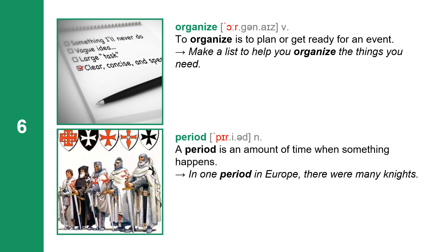Next one: organize. Organize has three syllables: O-R-G-A-N-I-Z-E. Organize is a verb. To organize is to plan or get ready for an event. Make a list to help you organize the things you need.